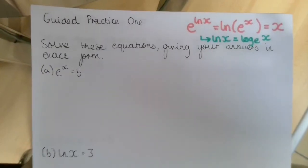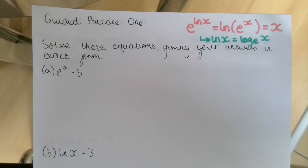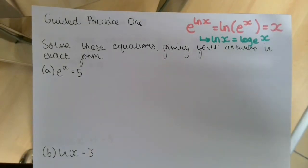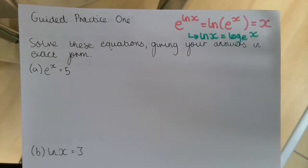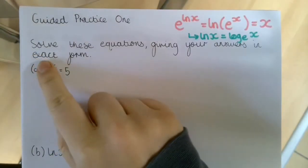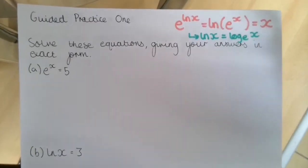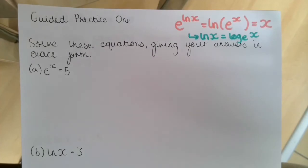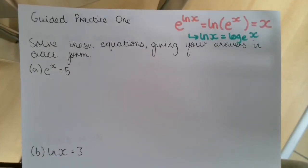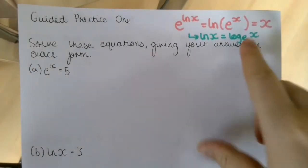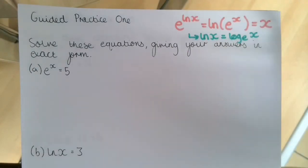This guided practice is about working with natural logarithms to solve equations — including logarithms and exponentials — giving our answers in exact form. Exact form means our answers are not going to be rounded to any significant figures or decimal places. In the previous lesson we were taking logarithms with base 10 and rounding our answers; for this lesson we want exact form, so we're going to work with natural logarithms — that's a logarithm with a base of e.